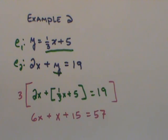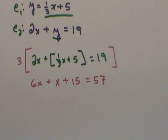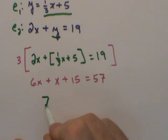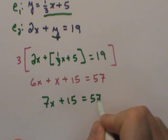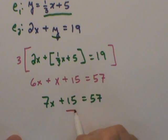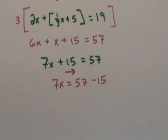Combine like terms. As I combine my like terms, I can have seven x plus fifteen equaling fifty-seven. I'll move the fifteen over. As I move the fifteen over to the right, this becomes seven x equaling fifty-seven. Fifty-seven take away fifteen is forty-two.